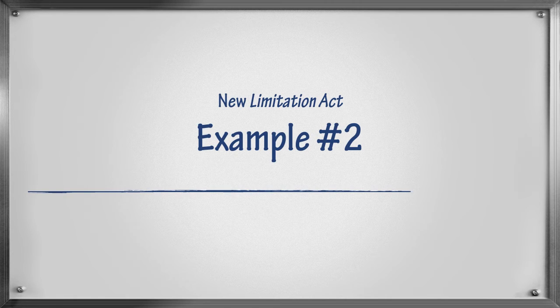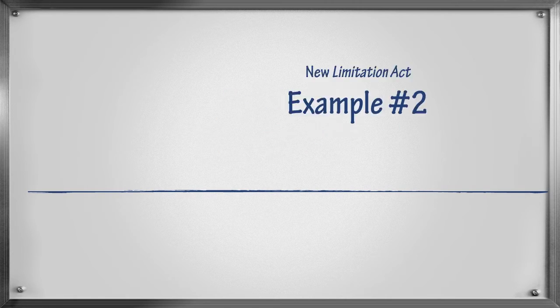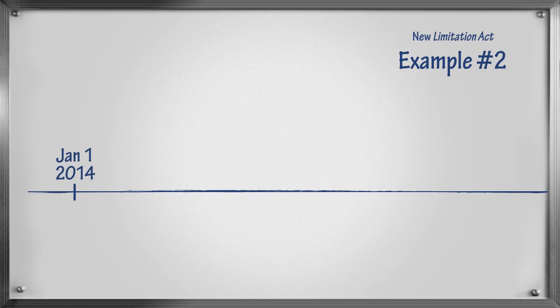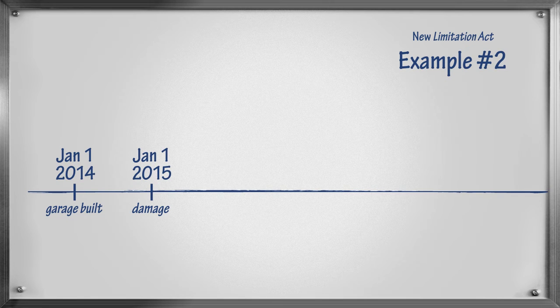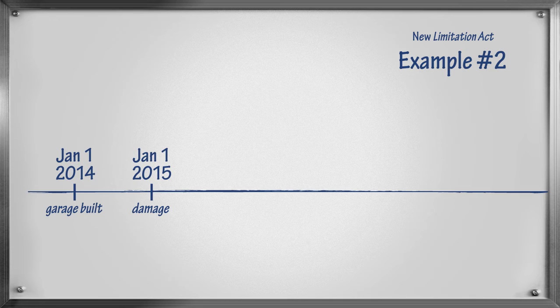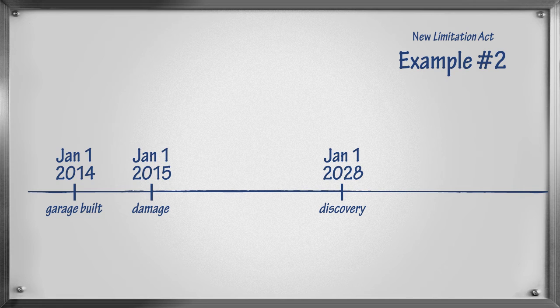Example 2: Once again, Mary's garage is built on January 1, 2014. As in the previous example, the garage floor begins to crack and the wall starts sinking one year later on January 1, 2015. Let's assume in this example that the damage is hidden behind some boxes inside and a large tree outside of the garage. As a result, Mary does not discover the damage until January 1, 2028, when she is suddenly unable to open her garage door as the result of the gradual sinking of her garage wall.